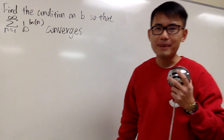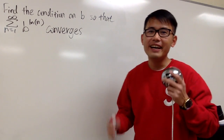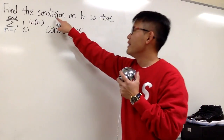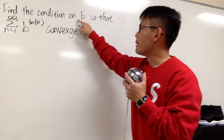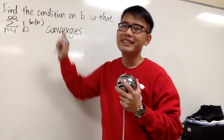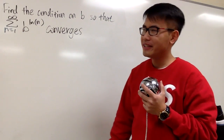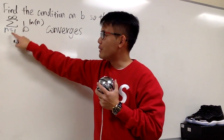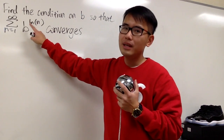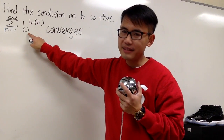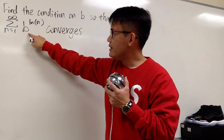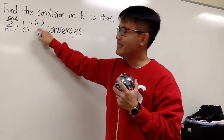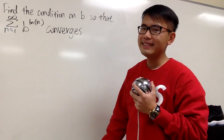Let's do some math for fun, and this is about infinite series. This one is different because we are going to find the condition on b so that this series converges. And look at this — we have the sum when n goes from 1 to infinity, b is the base, and we raise this to the power of ln n. This is crazy, right?